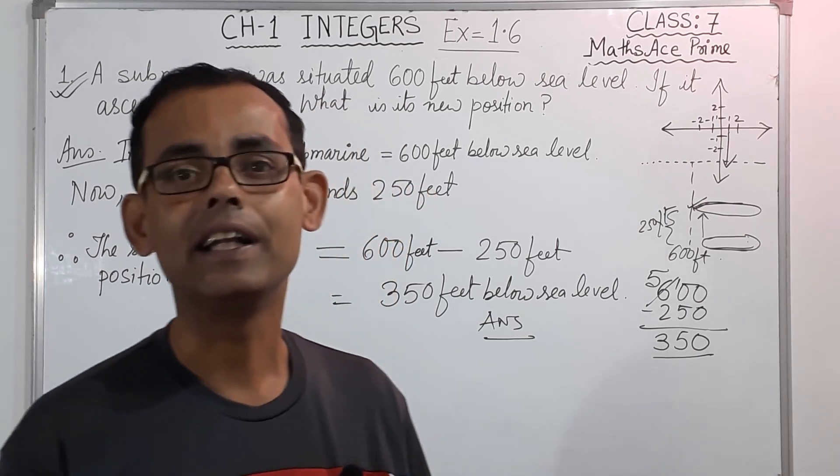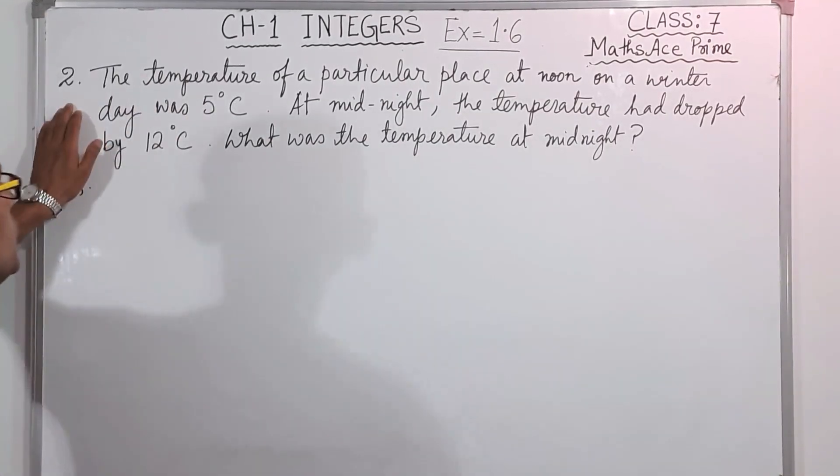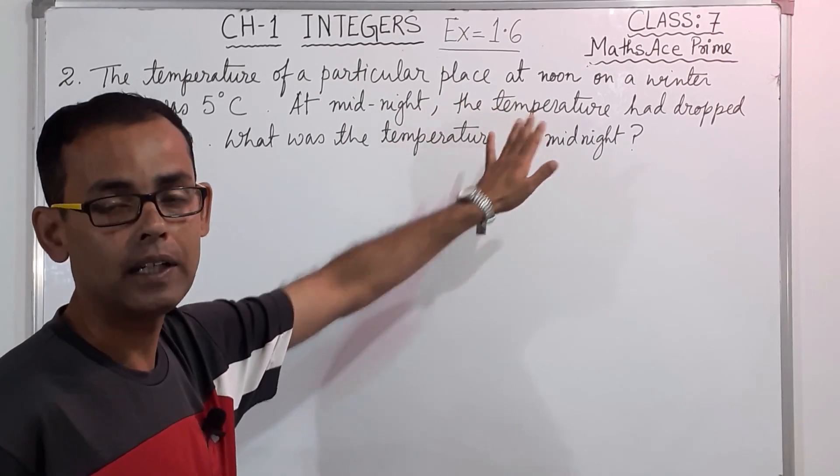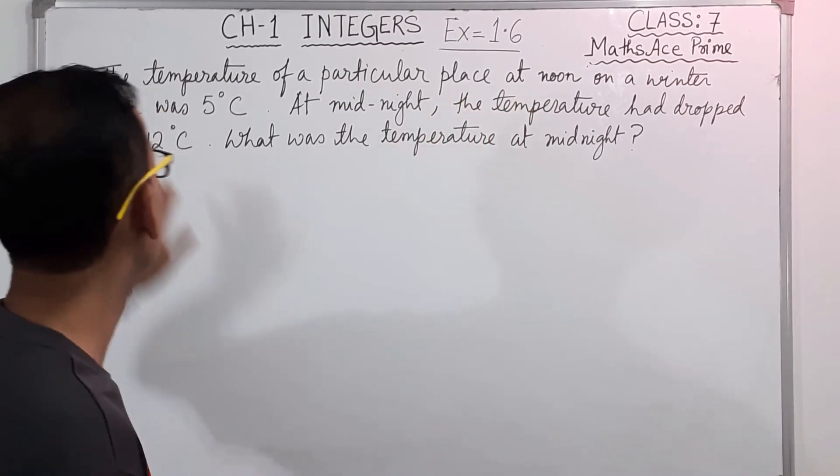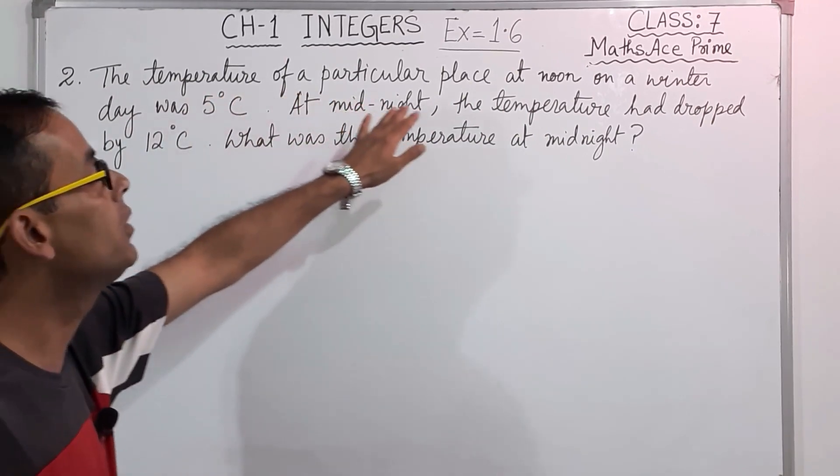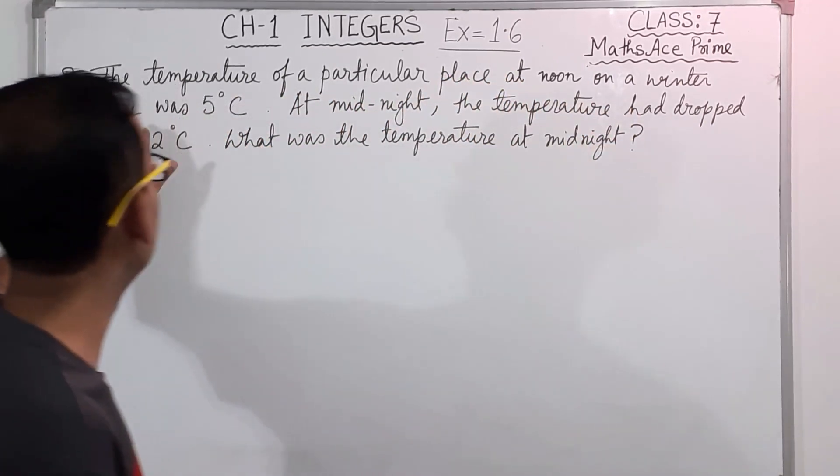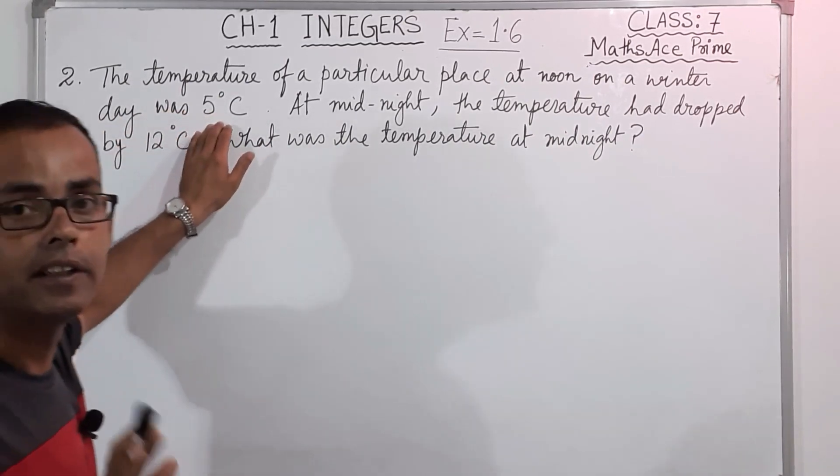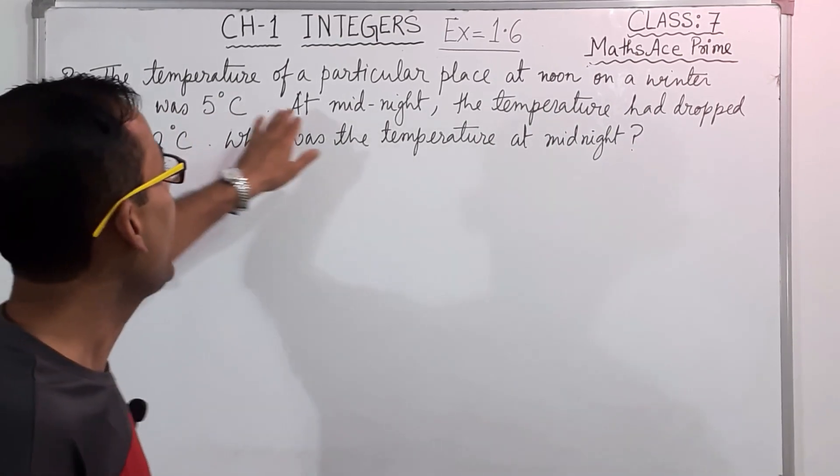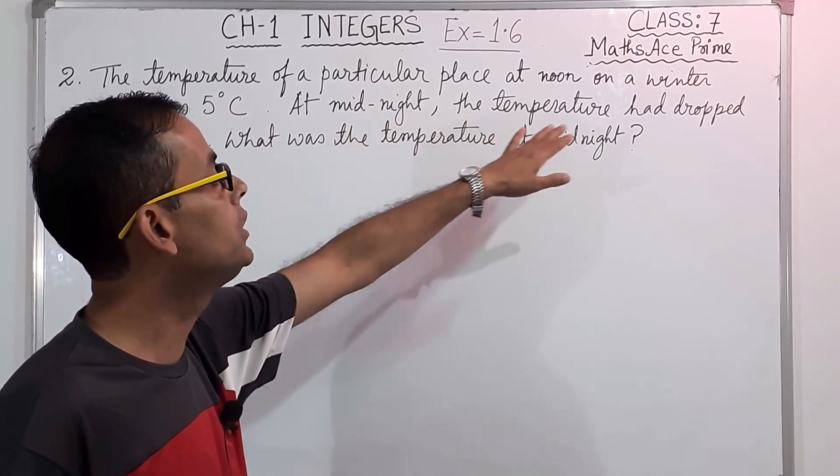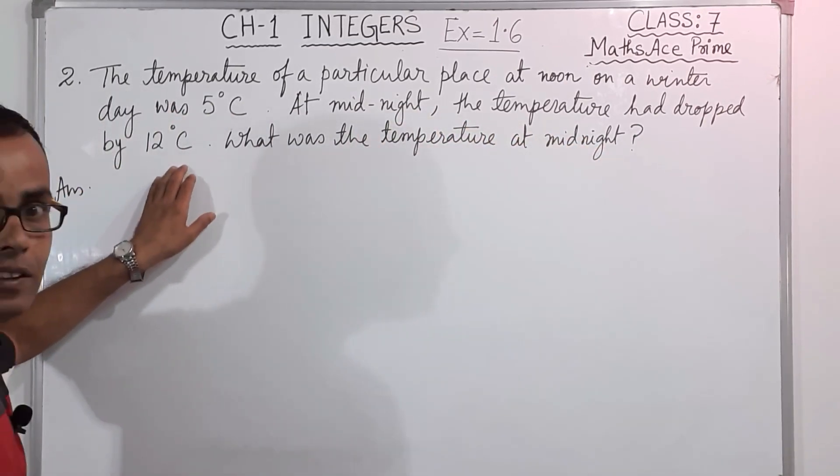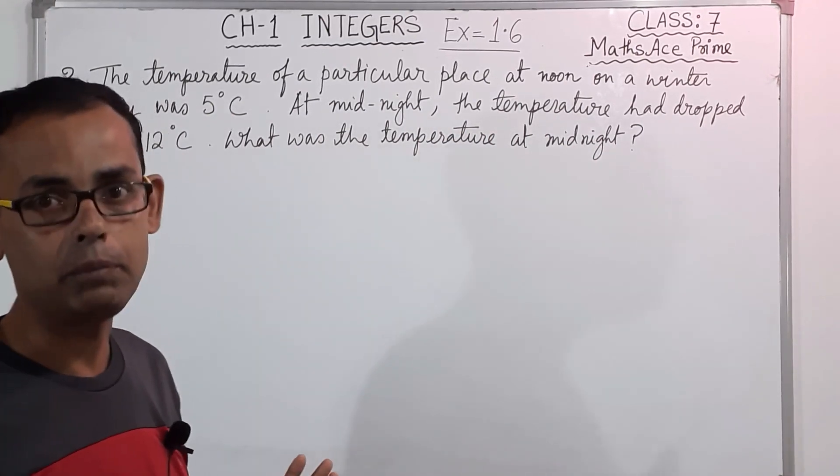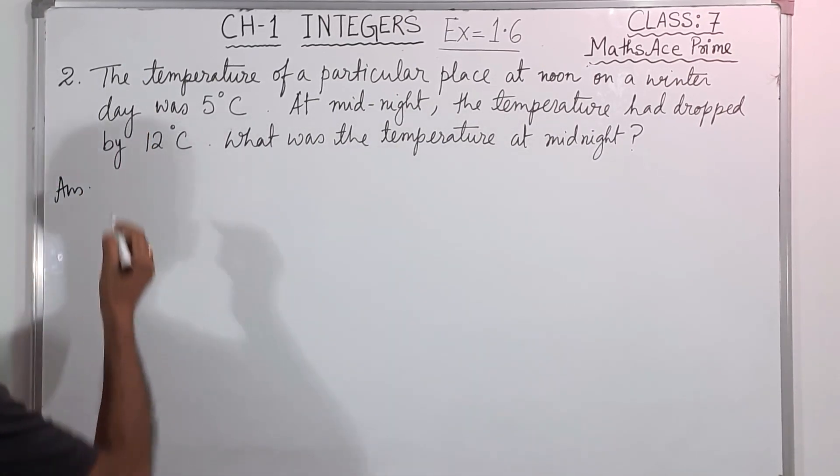Now we will move on to the next sum. Now, question number 2. What is the question? The temperature of a particular place at noon, that means 12 pm, at noon on a winter day was 5 degrees Celsius. At midnight, the temperature had dropped by 12 degrees Celsius, so the temperature became more low. So what was the temperature at midnight? So at midnight, what is the temperature, okay? So let us see.